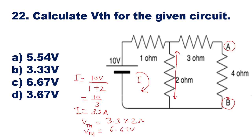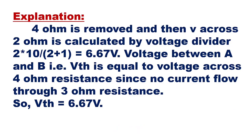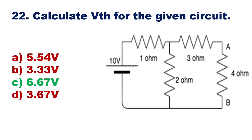VTH, the Thevenin's voltage, is 6.67 volts, so option C is the right answer. Explanation: The 4 ohm resistor is removed and the voltage across the 2 ohm is calculated by voltage divider: 10/3 × 2 = 6.67 volt. VTH equals voltage across the 2 ohm resistor, which is 6.67 volt.